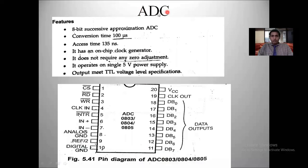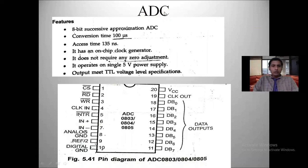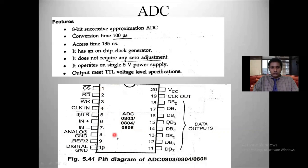ADC is an analog to digital converter — it will convert analog data into equivalent digital data. There are many ADC ICs available. In this presentation I will give you a brief idea about ADC 0803, 0804, or 0805 IC. All three ICs have the same number of pins — 20 pins.